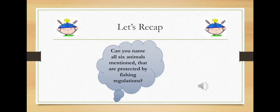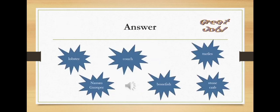Question number two. Can you name all six animals mentioned that are protected by fishing regulations? Your answers should include lobster, conch, turtles, the Nassau grouper, bonefish, and stone crab.